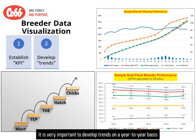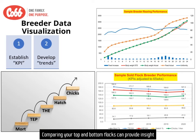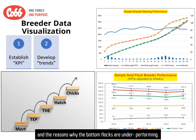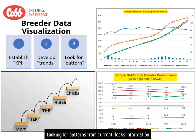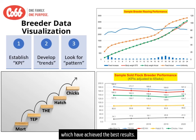It is very important to develop trends on a year-to-year basis to be able to track performance. Comparing your top and bottom flocks can provide insight to identify the best practices from the top flocks and the reason why the bottom flocks are underperforming. Looking for patterns from current flock information and past flock information should be an ongoing process — for example, every six months — to keep on track of the rearing and production programs which have achieved the best results.